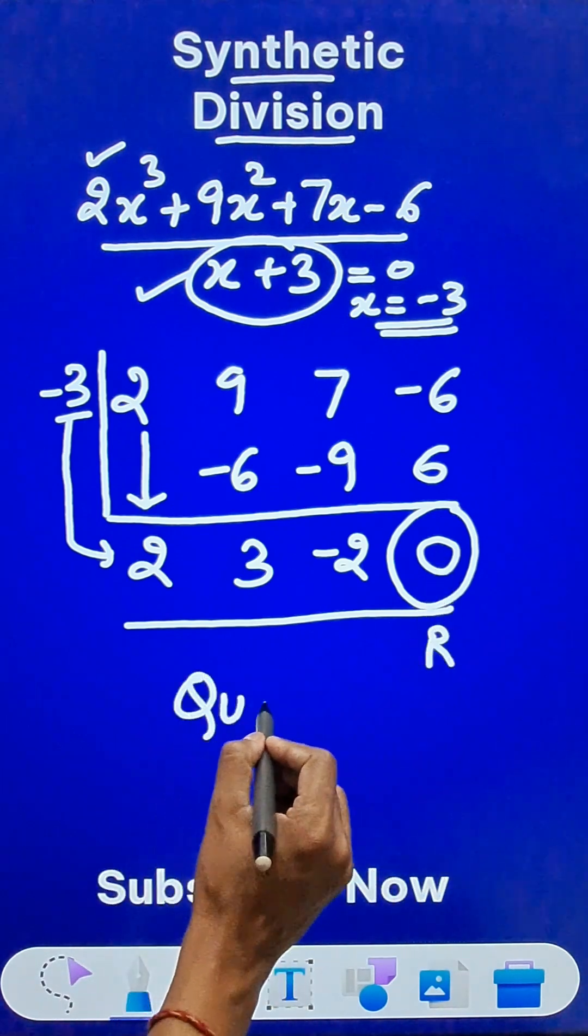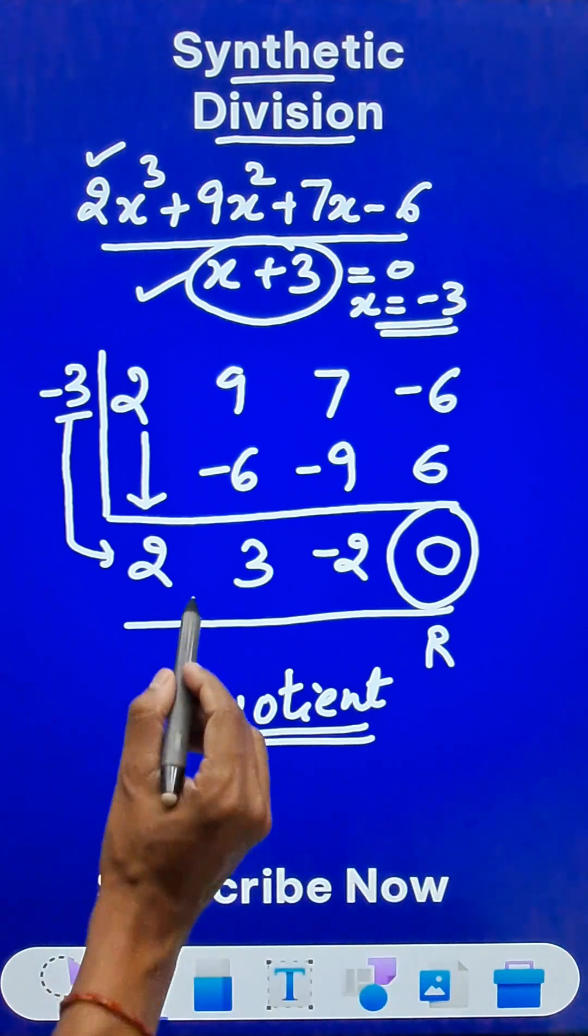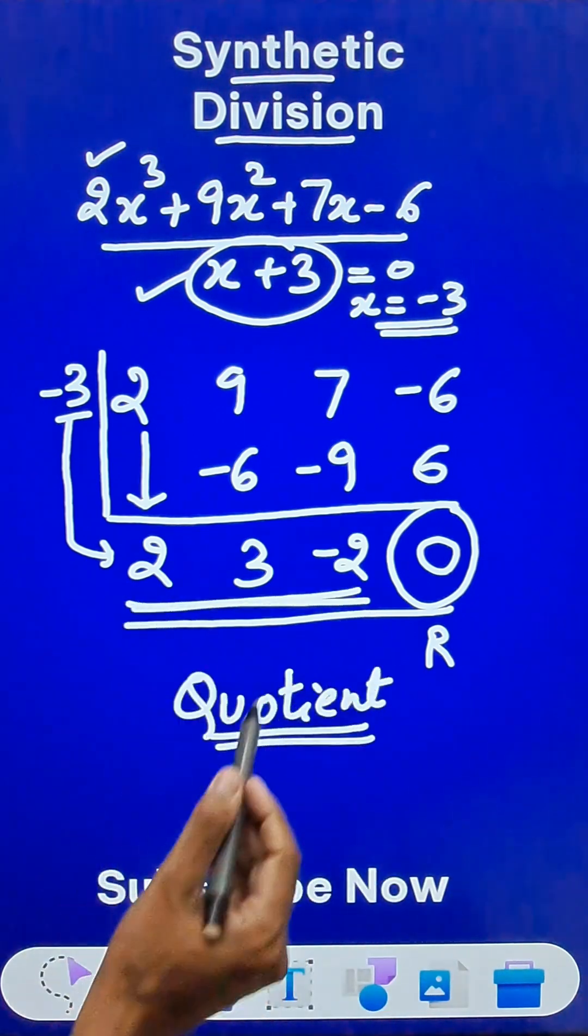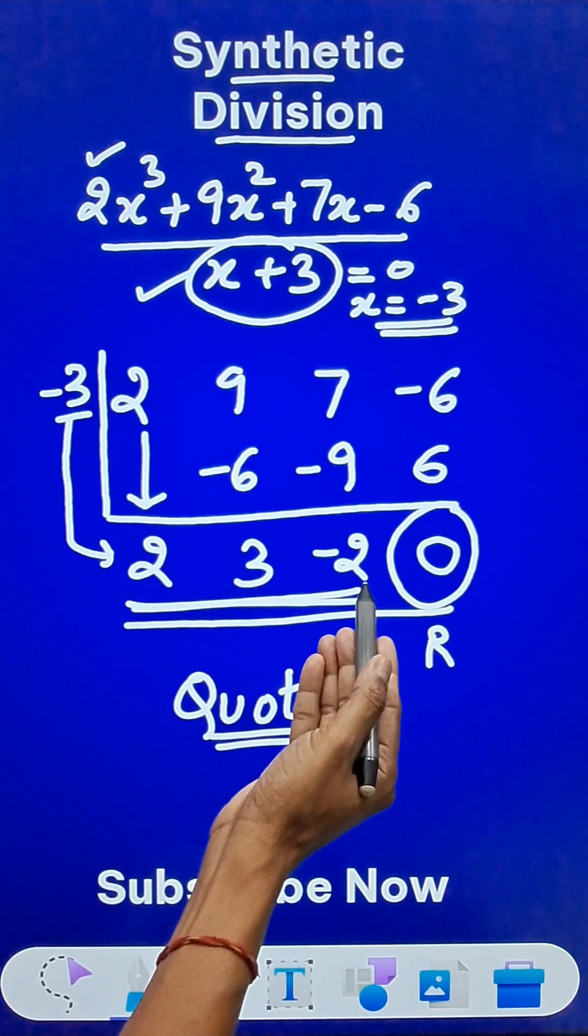What about the important quotient? That means what do you get as the answer? For that, you have to look at these three numbers. Since we have three numbers here, so three terms are contained in a quadratic polynomial.